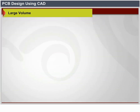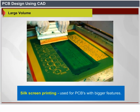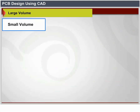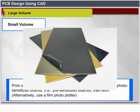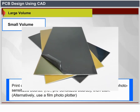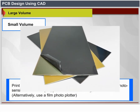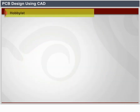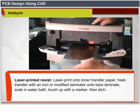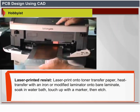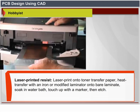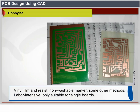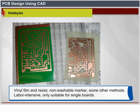Method selection depends on volume and resolution required. Large volume: silk screen printing is used for PCBs with bigger features; photo engraving is used when finer features are required. Small volume: print onto a transparent film and use a photo mask along with photosensitized (pre-sensitized) boards, then etch; alternatively, use a film photo plotter, laser resist ablation, or PCB milling. Hobbyist methods include laser-printed resist using toner transfer paper, heat transfer with an iron or laminator, followed by soaking, touch-up with a marker, then etching; also vinyl film and resist, non-washable marker, or other labor-intensive methods suitable only for single-sided boards.